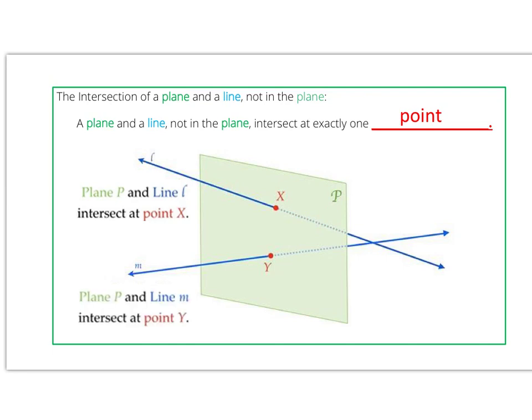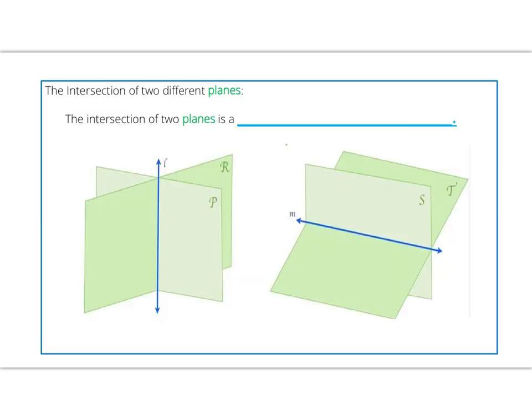Another example: we have line M passing through, again noting how it's passing through with the dashed portion of the line, and it's intersecting plane P at point Y.